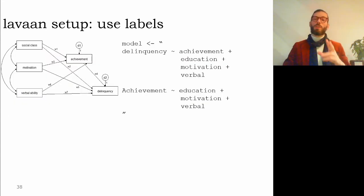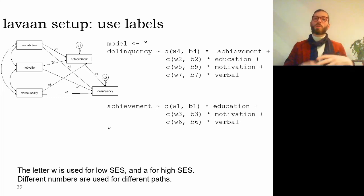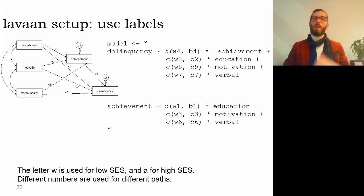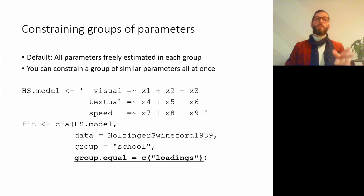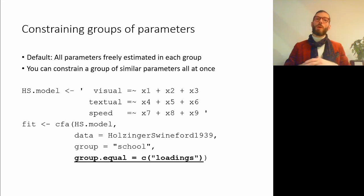The model specifies regression coefficients of education, motivation, and verbal ability on delinquency and on achievement. Using pre-multiplication syntax, both groups get unique labels for all parameters, ensuring all coefficients are freely estimated. For example, the effect of education on delinquency is labeled W2 for the low SES group and B2 for the high SES group. Doing everything by hand is a lot of work, but lavaan offers ways to constrain whole groups of parameters at once.